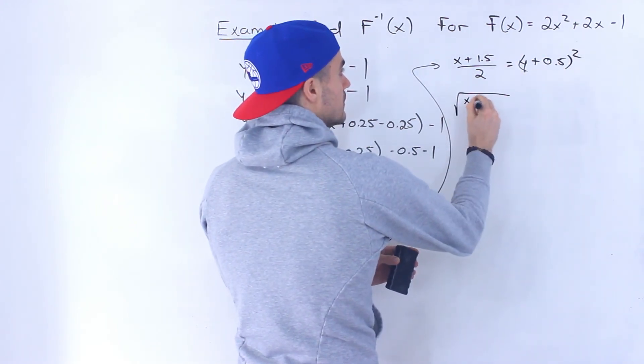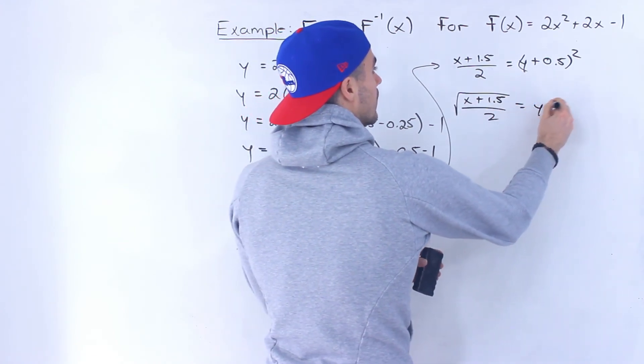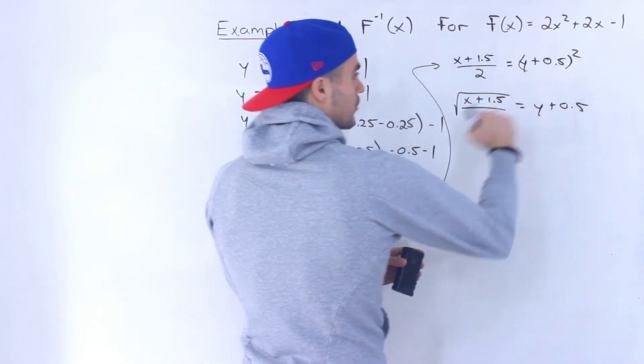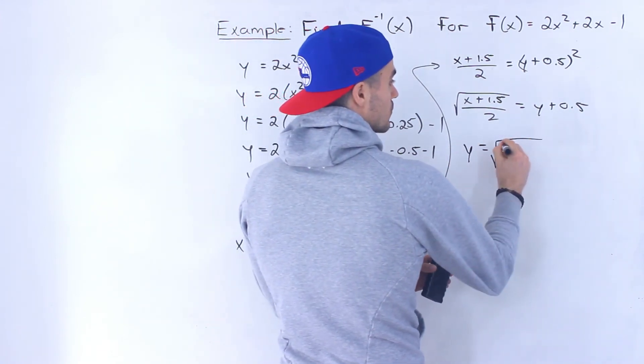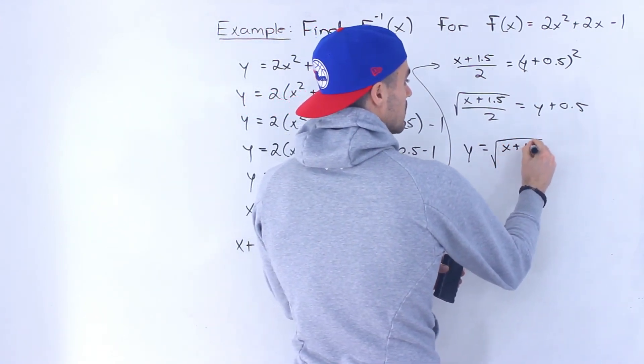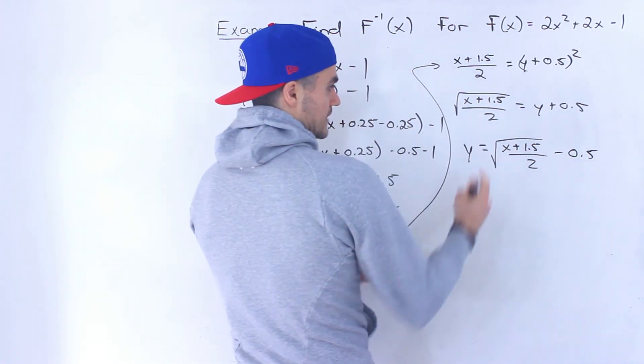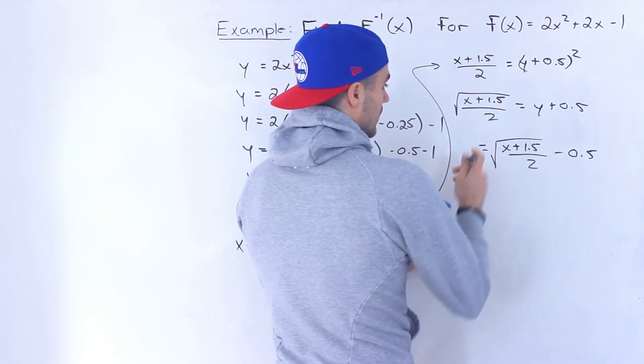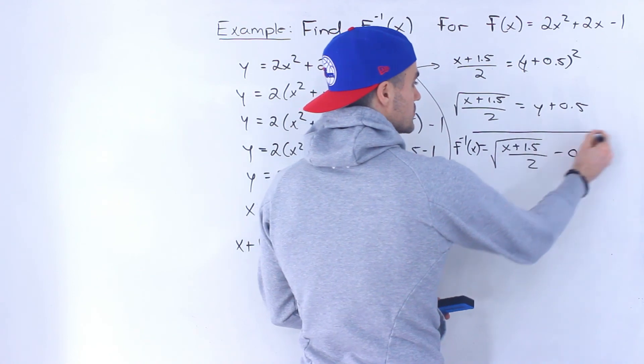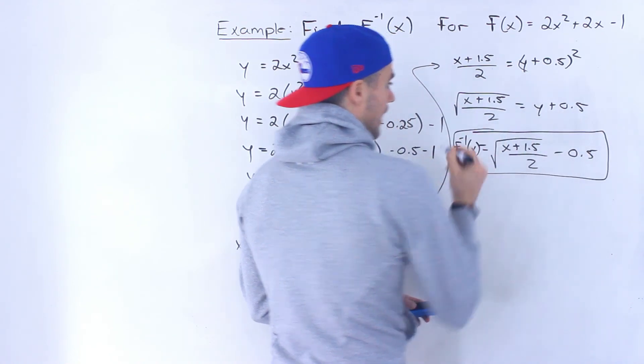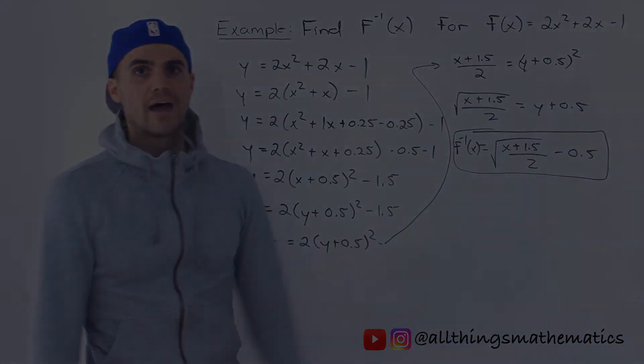Square root both sides. Then bring the 0.5 over. So we'd end up having y equals the square root of x plus 1.5 over 2 minus 0.5. And then instead of putting a y here, we could put that inverse notation. So this here ends up being the final answer. This here is the inverse of that function.